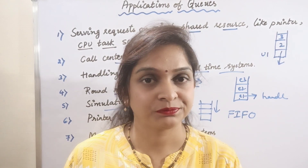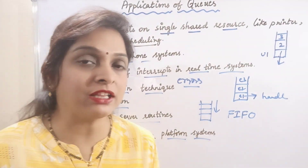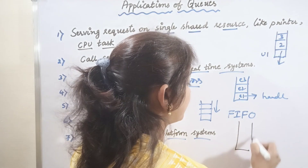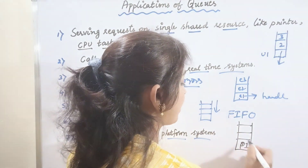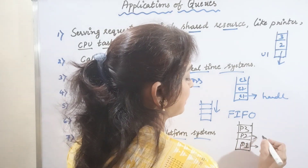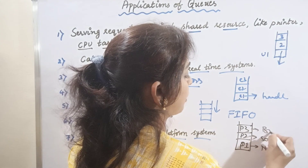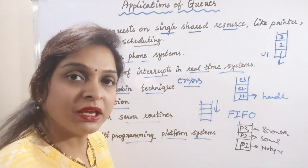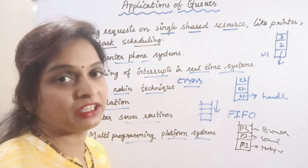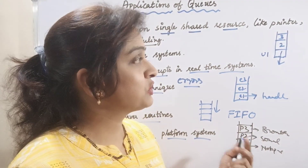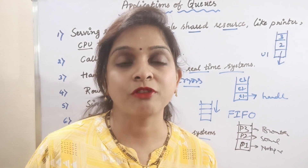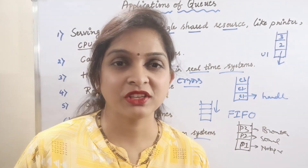But in reality all programs are put into the queue and executed one by one according to their turn, then given to the processor. So program 1 — say Notepad — program 2 — a sound file — program 3 — a browser — are all put into the queue and executed one by one. That concludes the applications of the queue data structure. In the next video we will discuss the algorithm for how the queue performs enqueue and dequeue operations. That's all for today. Take care, bye.